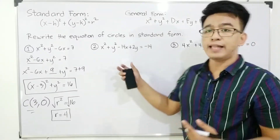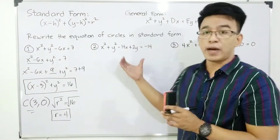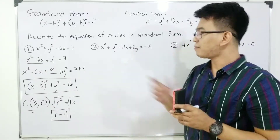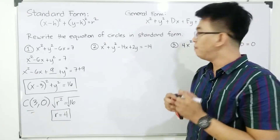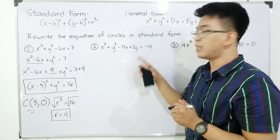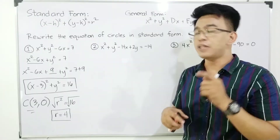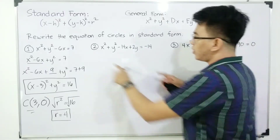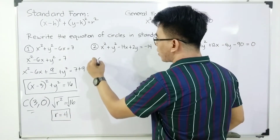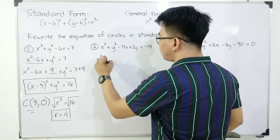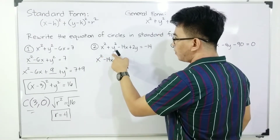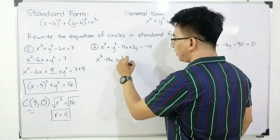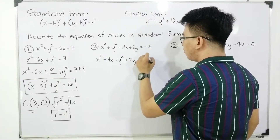Now let's move on with item number two. This one is a bit different from the first one because we have a y term here as well. We have x squared plus y squared minus 14x plus 2y is equal to negative 14. The first thing to do is regroup the terms: x squared minus 14x, plus y squared plus 2y, is equal to negative 14.